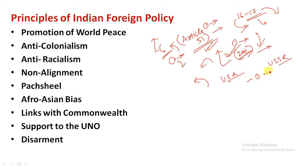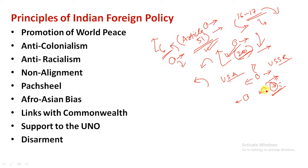The non-alignment policy means India should not exercise military alliances or favor any block. India should not prefer one block over the other in military matters. India should not accept military help from any block that requires alignment. India's approach regarding foreign policy is to have friendly relationships with all countries without joining military alliances.